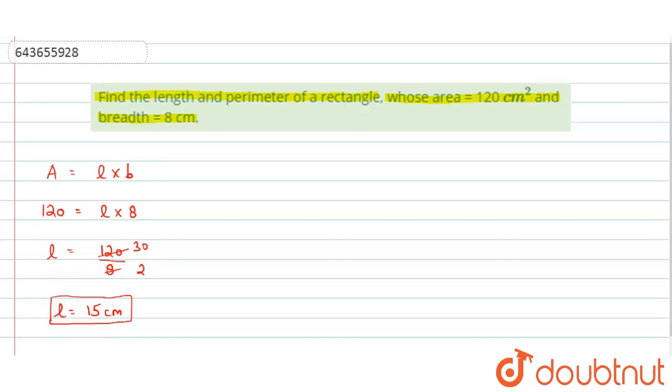Now we just need to find the perimeter also. So perimeter of rectangle is equal to twice in bracket l plus b, length plus breadth. So perimeter equals to 2.